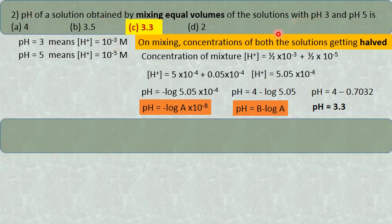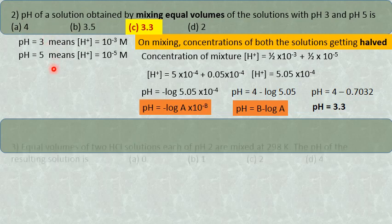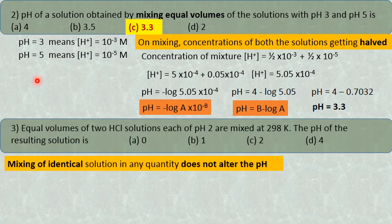It is not 4, it is 3.33. So please do not get into the trap — choice A is 4, and most students will be trapped there in urgency, but it is not true. Please be cautious. Now take another question: equal volumes of two HCl solutions, each of pH 2, are mixed at 298 Kelvin. The pH of the resulting solution is — here both solutions are of the same pH.